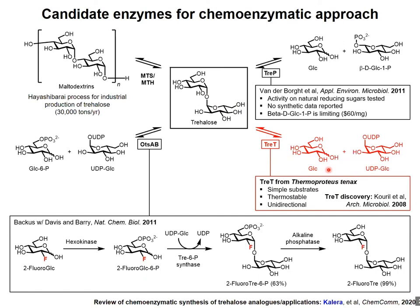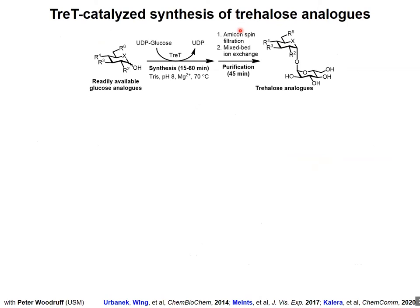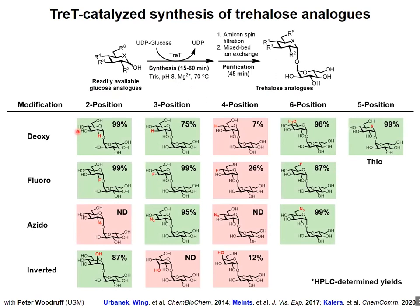We're now able to generate a fairly wide variety of trehalose analogs from their corresponding glucose analogs in high yield and pure form in only a couple of hours, thanks to rapid reaction and purification processes. TRE-T is fairly tolerant of a wide variety of modifications at various positions around the hexose ring, aside from the four-position. HPLC yields show conversions are high for many substrates — in some cases quantitative — and isolated yields are typically in the range of about 70 to 80 percent.